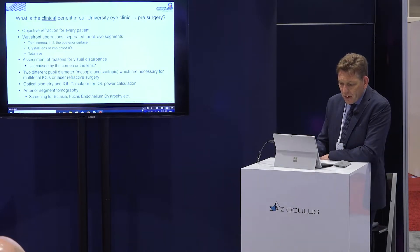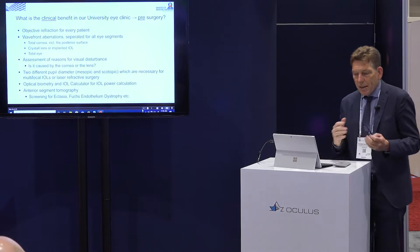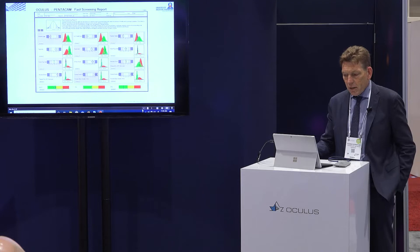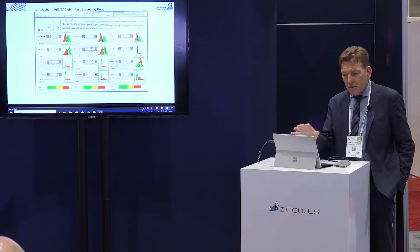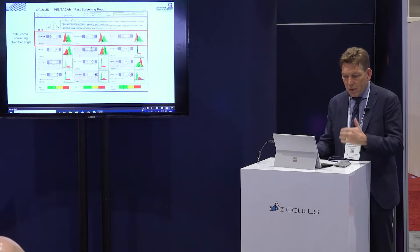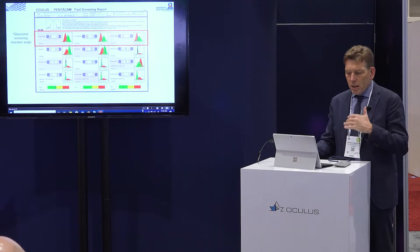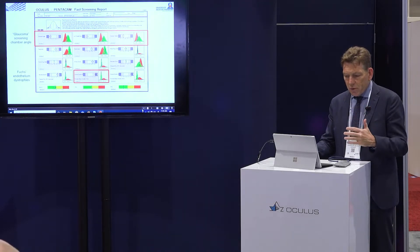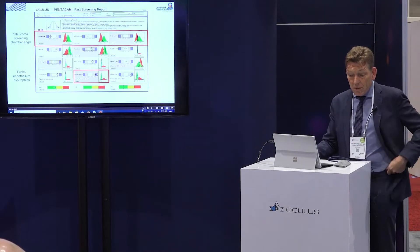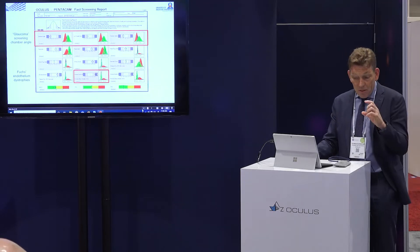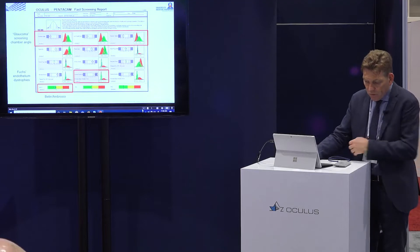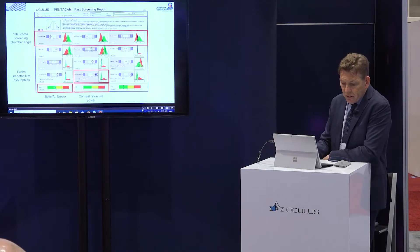The anterior segment tomography is really good. We also use it for ectasia screening. This is the fast screening report: it includes glaucoma screening, anterior chamber depth, corneal thickness for any corneal disease, endothelial dystrophy — if the cornea is thicker you already know something is going on — and the Belin-Ambrosio for ectasia screening.